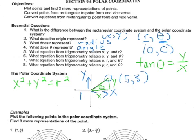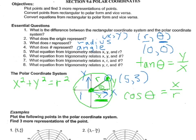What equation from trigonometry relates x, r, and theta? We know that x values have to do with cosine, so cosine theta equals x over r. Cosine theta equals adjacent over hypotenuse — the radius is the hypotenuse because it starts at the center and shoots out to our circle. Finally, the equation relating y, r, and theta is sine theta equals y over r.